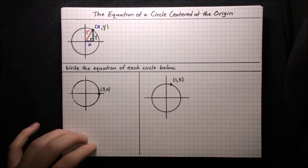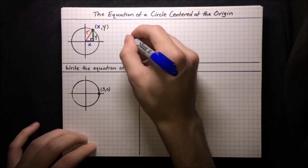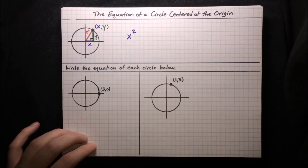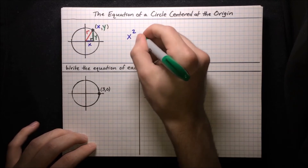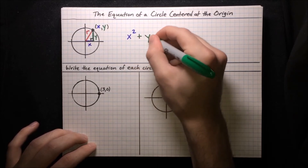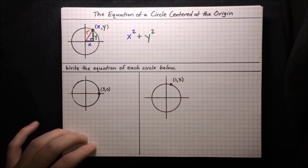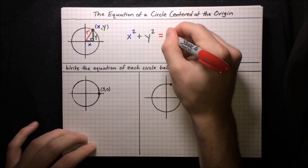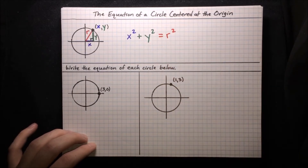Writing down the Pythagorean theorem for this triangle: one side squared, x squared, plus the other side squared, y squared, is equal to the hypotenuse squared, r squared. So now that we know the equation of a circle centered at the origin is x² + y² = r², let's go ahead and do some exercises.